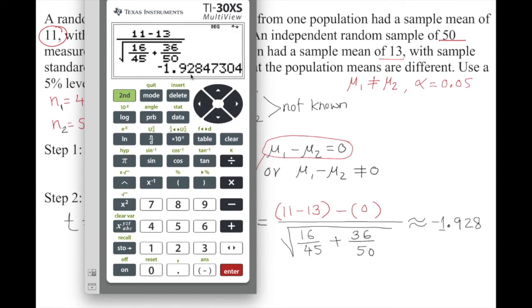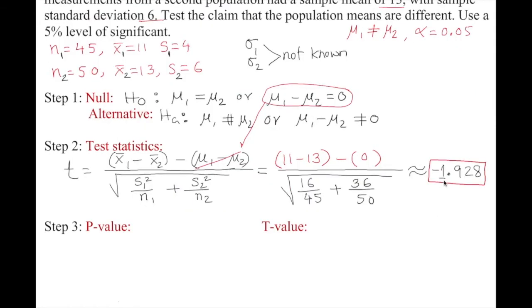The t-value is approximately −1.928. Unlike the z-test where we round to two decimal places for the z-table, here we keep this as our t-statistic. Now we find the p-value: we need the degree of freedom, then go to the t-table to see where −1.928 falls between significance levels.